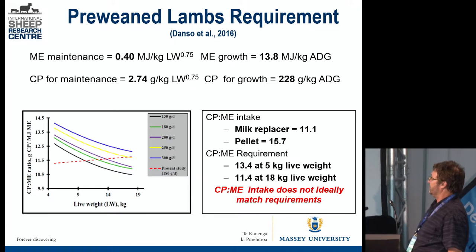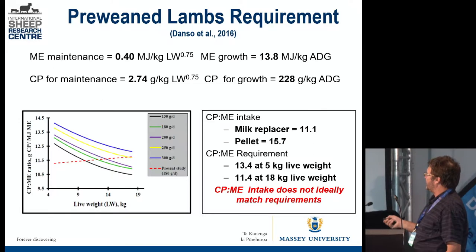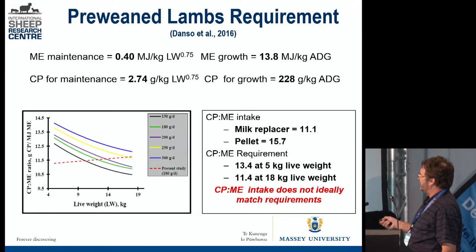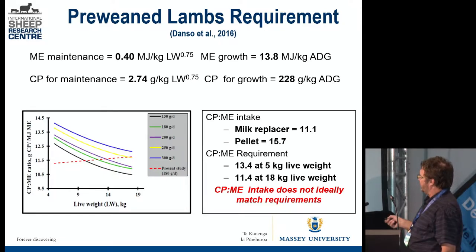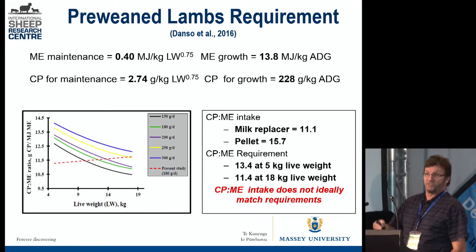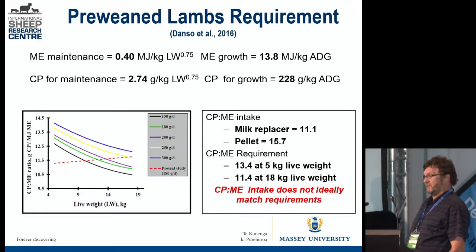When you have those values, you can calculate how much energy you need at a given live weight for a given growth rate, and you can look at what is the ratio between the protein requirement and the energy requirement to achieve different growth rates at different live weights. If you grow at 150 grams a day from birth to about 20 kg, this curve is coming down — the ratio between the protein and energy requirement to sustain that performance. If you have an animal going 300 grams a day, you get the same curve but you need more protein per unit energy to sustain this increased growth.